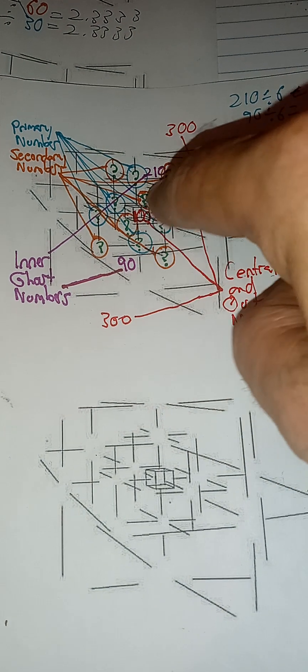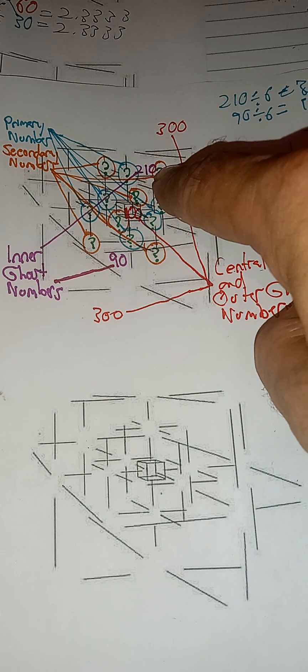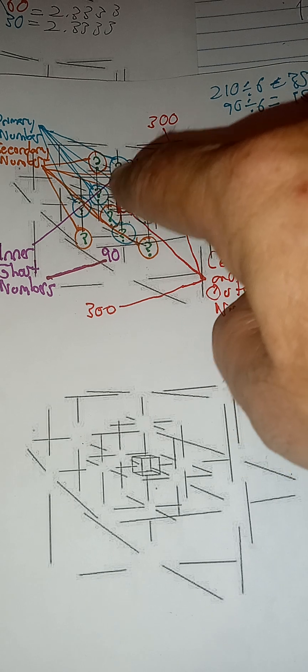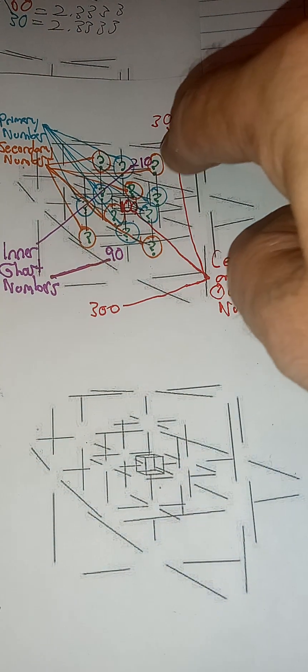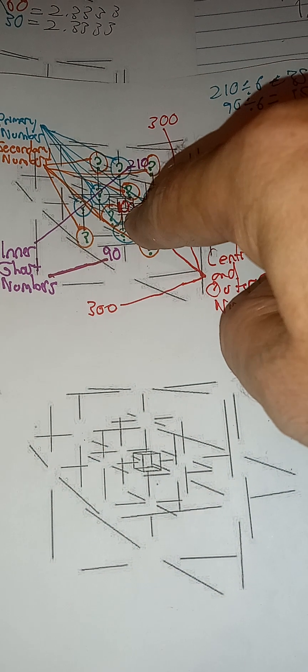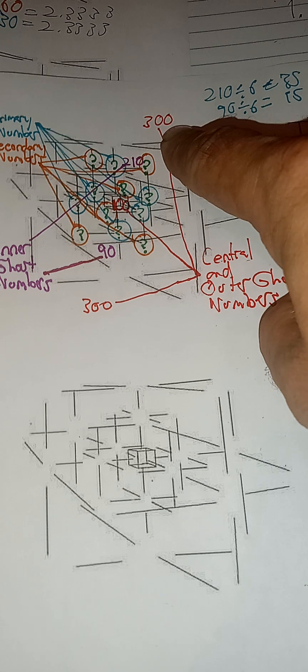The inner ghost numbers can give the whole magic ghost number cube just by knowing the central ghost number and thus the outer ghost number.